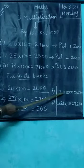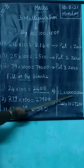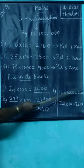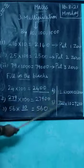Then fourth one: 12 into 1000 is equal to what? 12 into 1000 equals 12000. We put three zeros to the right of the given number. Understand?